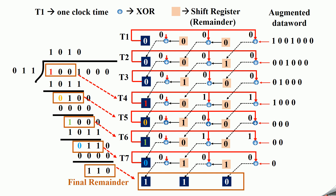Now let me take it as an example. We all know this is an XOR gate and this is a shift register. This side represents the augmented data word, and this shows the division process.